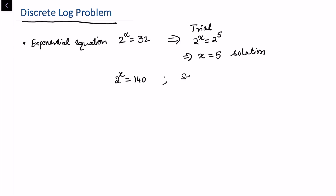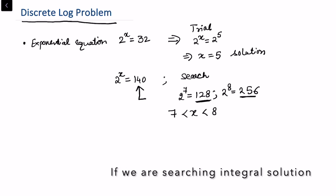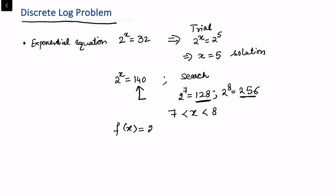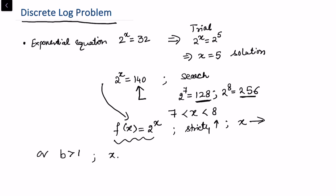If I take another equation 2^x = 140, I can see that 2^7 = 128 and 2^8 = 256. So 140 lies between 128 and 256, meaning x should lie somewhere between 7 and 8. This is because f(x) = 2^x is a strictly increasing function — as x increases, the function also increases. Whenever b > 1 and x1 > x2, then b^x1 > b^x2.